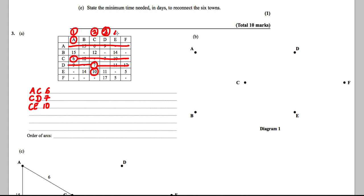E is our next column, numbered four. We cross out everything in the E row. Now looking down four columns, the smallest of 15, 12, 17, 14, and 5 is clearly 5. So E to F is our next arc, with a weight of 5.